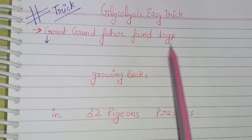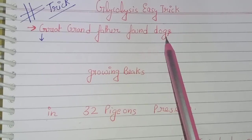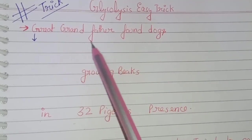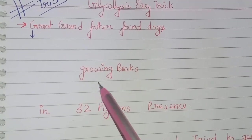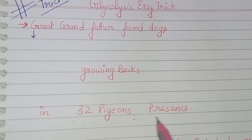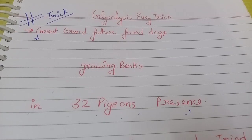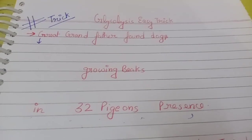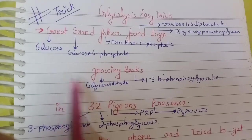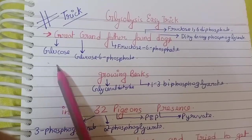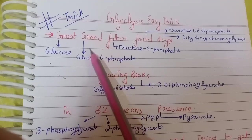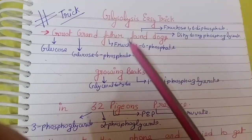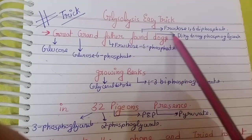This is the first trick by which we can remember the pathway of the glycolysis cycle. The trick is: 'Great grandfather found dogs growing beaks in 32 pigeon prisons.' Here G stands for glucose, Grand G stands for glucose-6-phosphate, Father F stands for fructose-6-phosphate, Found F stands for fructose-1,6-diphosphate.